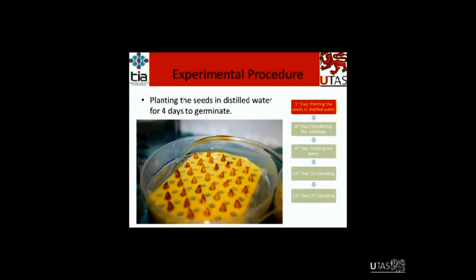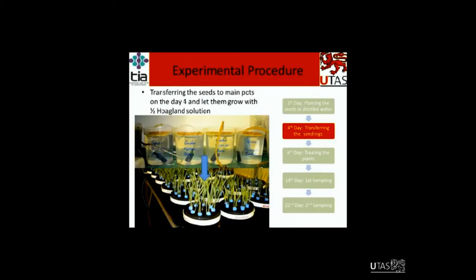I started the experiment by planting seeds in smaller pots in a growth room with controlled temperature and an air pump, because the seeds need aeration for germination. We kept them there for four days, then transferred them to the main pots. As you can see in the photo, we used black pots to avoid any light reaching the roots, because it's a hydroponic system — unlike soil, there is no natural light exclusion for the roots. After two days of transferring, on the sixth day after planting, we started the treatments. Over an eight-day period, on the 14th and 22nd day, we did the sampling.